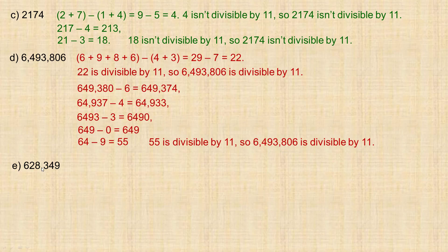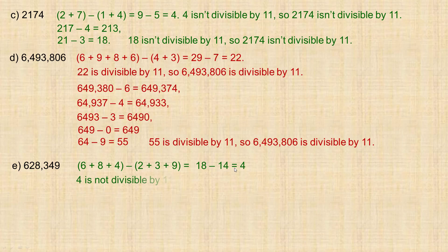Last example: 628,349. We add the odd-place digits — 6, 8, and 4 — to get 18, and the even-place digits — 2, 3, and 9 — to get 14. Then 18 minus 14 equals 4. Since 4 is not divisible by 11, 628,349 is not divisible by 11.